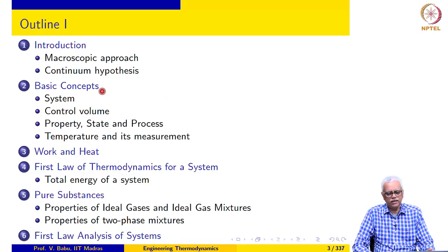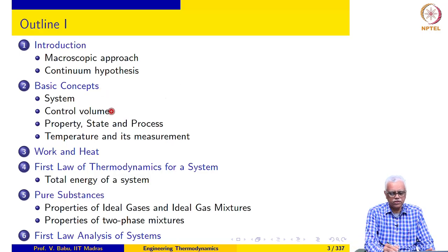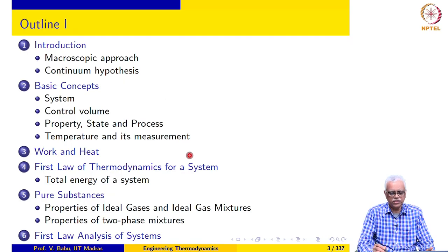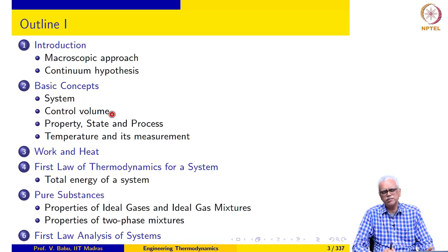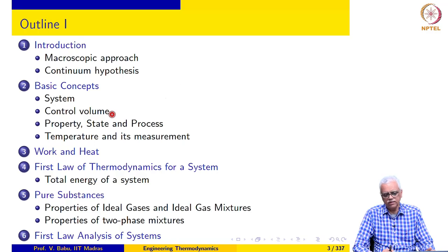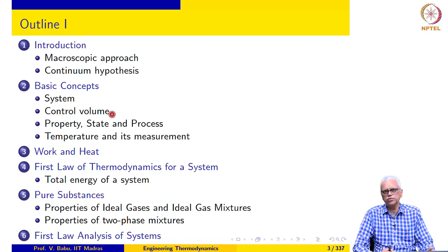In the second module, we discuss certain basic concepts such as system, control volume, property and state of a system, processes undergone by a system, and we close the module with a discussion on temperature and its measurement. These concepts may seem familiar and somewhat simplistic, but we will try to highlight that there are many subtle aspects involved, and we will illustrate these subtleties through many examples.